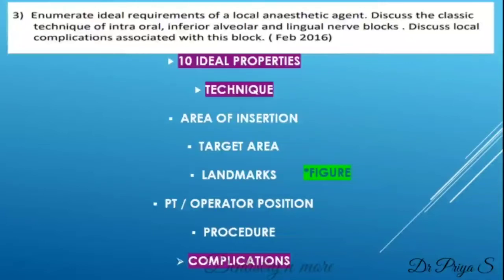Next, discuss the classic technique of IANB. Any local anesthetic technique asked should be explained under the following headings: the area of insertion, target area, landmarks, the position of the patient and the operator, and then the procedure. You can draw certain diagrams to emphasize on the landmarks or to describe the procedure. Diagrams are very important.